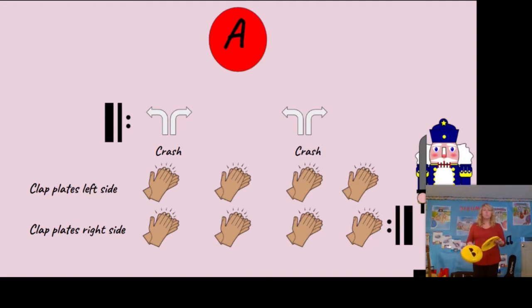You can see that repeat symbol at the beginning with two crashes and then our claps. So it's going to look like this. Then you're going to go to the left side - one, two, three, four. And the right side - one, two, three, four. And then you repeat. One, two, three, four. One, two, three, four.